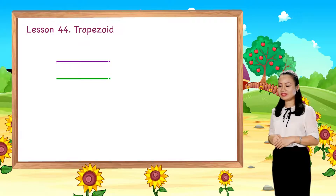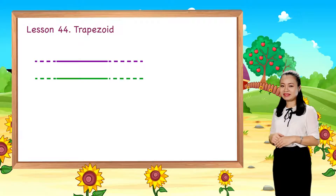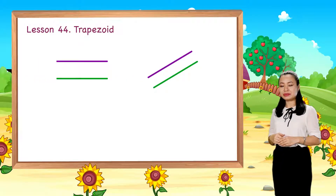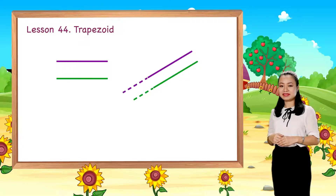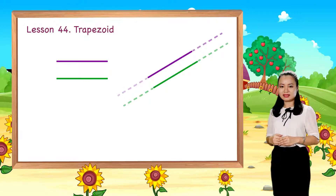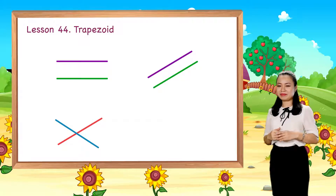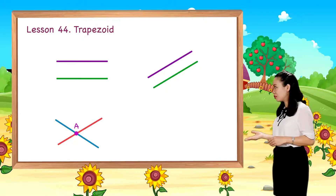These lines are parallel because they never meet each other, no matter how long they are. These lines are also parallel because they never meet each other, no matter how long they are. These lines are not parallel because they cross each other at this point.